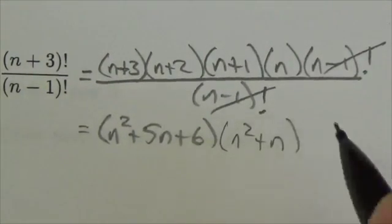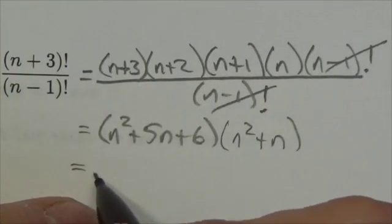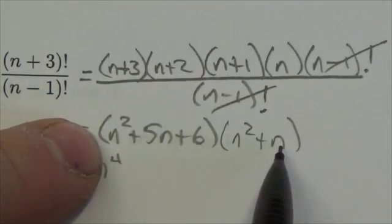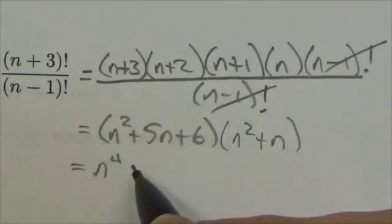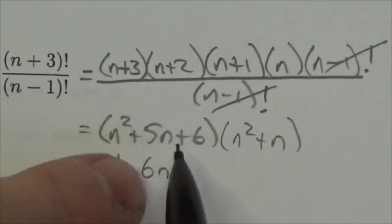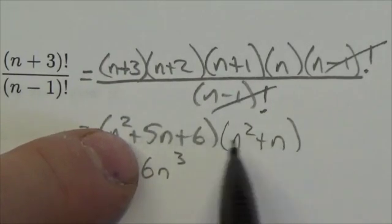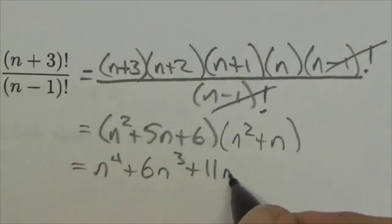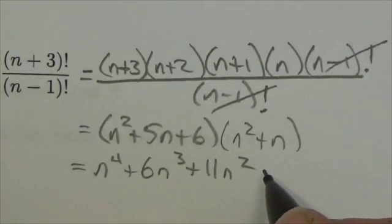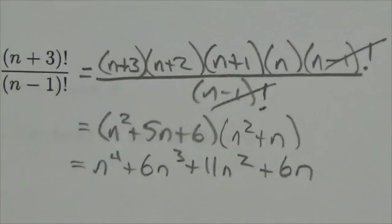Times n squared plus n. Oh, what are we going to get here? That's going to be n to the fourth. Okay, then I'm going to get n cubed plus 5n cubed, so plus 6n cubed. Then I'm going to move on to this one, so it's going to be—sorry, I already did this one—so it's going to be 5n squared plus 6n squared, so plus 11n squared. And then I'm going to get just the 6n. And there we go, so that's what it looks like when you expand that whole thing out.